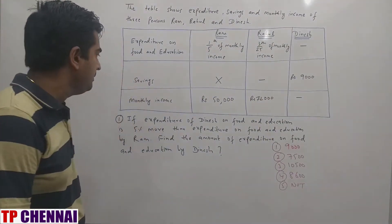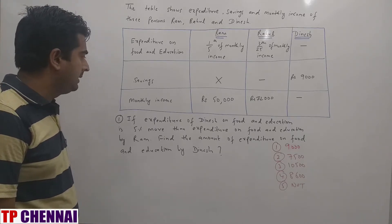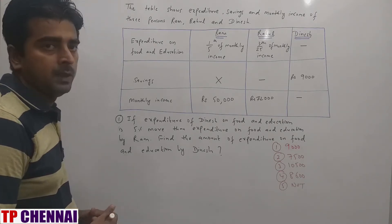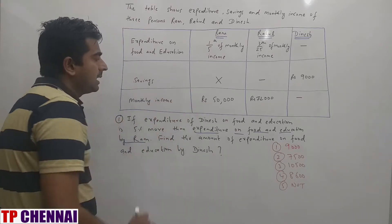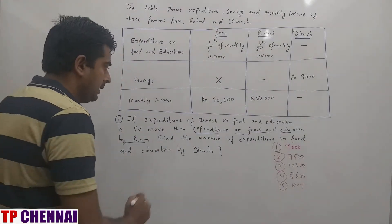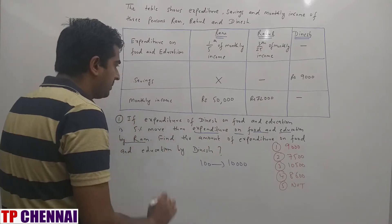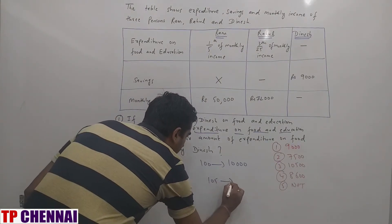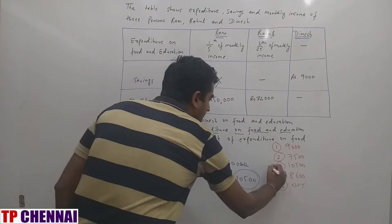Question 1: If expenditure of Dinesh on food and education is 5% more than expenditure on food and education by Ram, find the amount. Ram's monthly income is 50,000 and expenditure is 1/5th of income, so 1/5 × 50,000 = 10,000. Dinesh spent 5% more, so 105% of 10,000 = 10,500 is the answer.